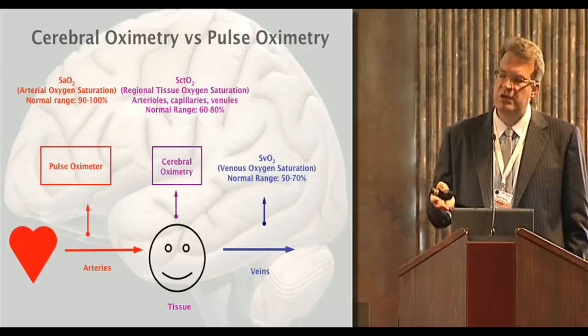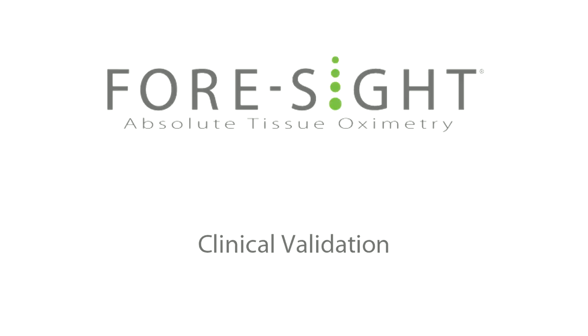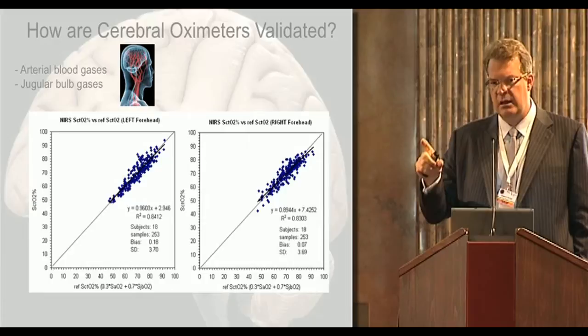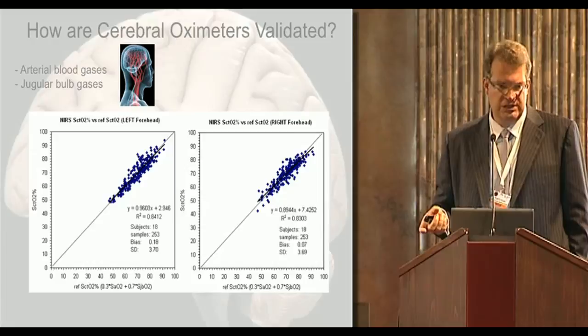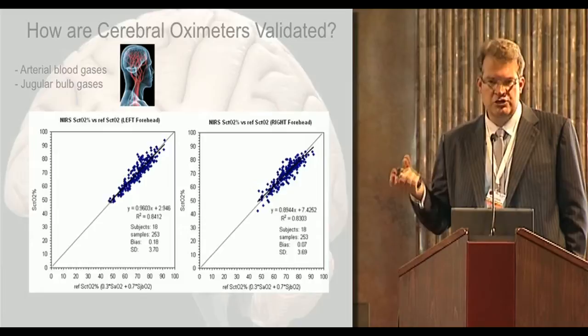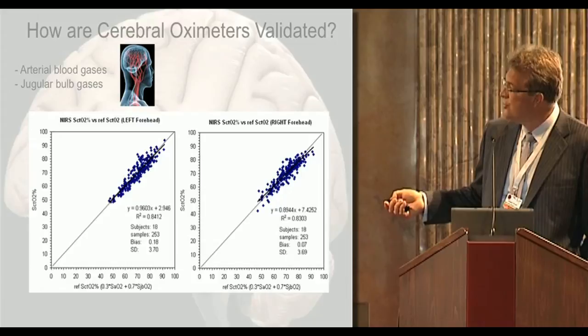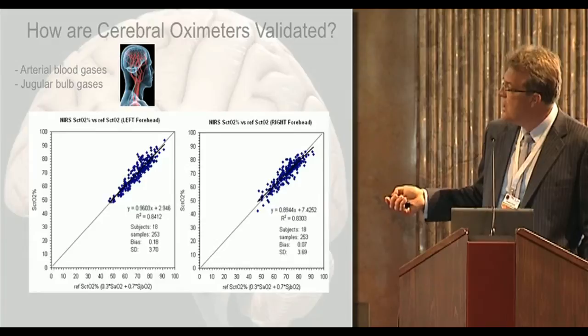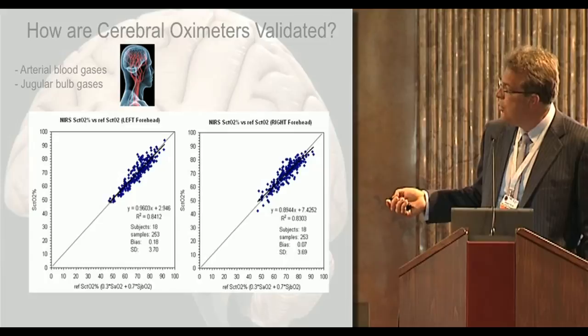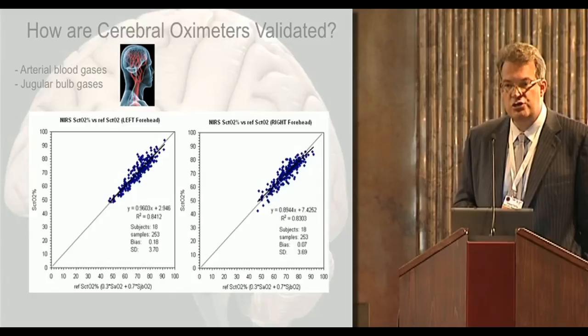What you're seeing on the screen has normal values somewhere between 60 and 80%. To know that the number on the screen truly reflects physiology, we have to measure it against the gold standard — invasive co-oximetry measuring arterial blood as well as jugular bulb blood. The cerebral tissue oxygen saturation is comprised of 30% arterial and 70% venous, so arterial saturation times 0.3, plus jugular bulb saturation times 0.7, should equal the number the machine displays.